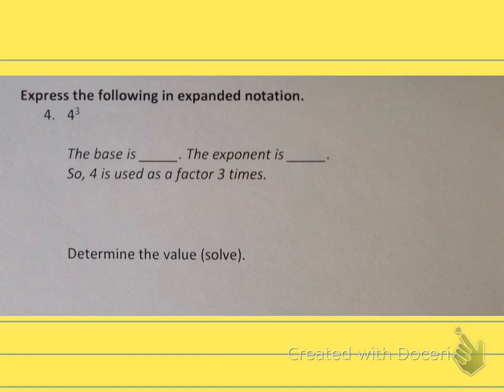In this problem, 4 to the 3rd power, the base is 4 and the exponent is 3. This means 4 is used as a factor 3 times. So we have 4×4×4. I see a 4 in that multiplication problem 3 times.